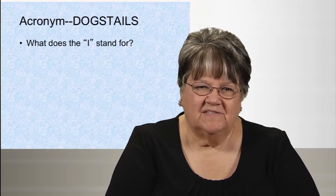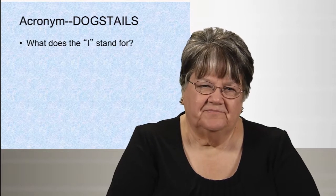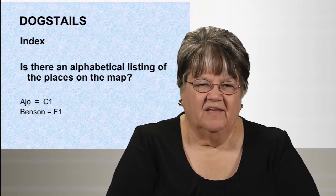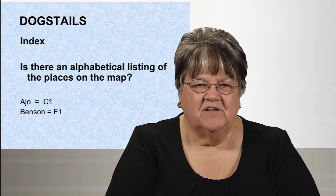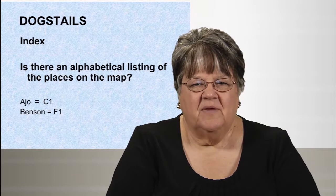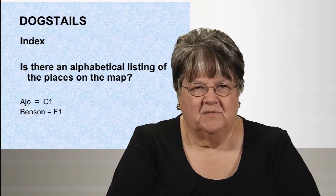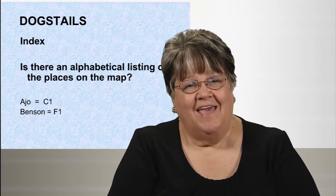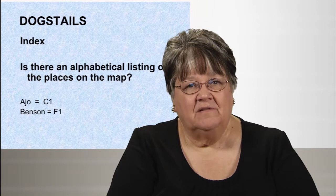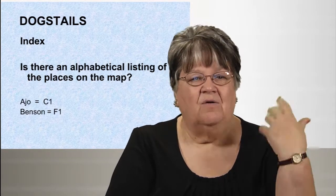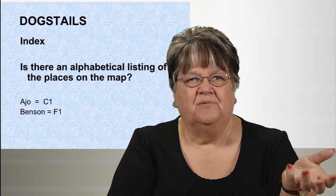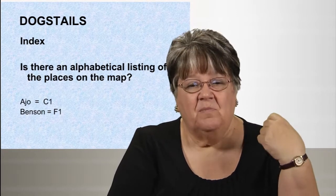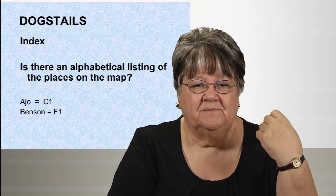The I in Dog's Tales stands for index — an alphabetical listing of the places on the map. Most road maps have an alphabetical listing so you can find places like Ajo or Benson, but not all maps have one.